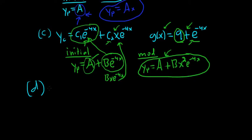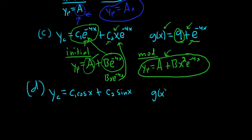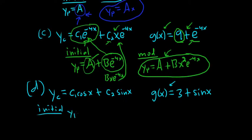Example D. Yc is equal to C1 cosine x plus C2 sine x. That's the homogeneous solution — the complementary function. And the right-hand side of our DE is 3 plus sine x. The very first step is to look at the right-hand side of your DE, which is g.